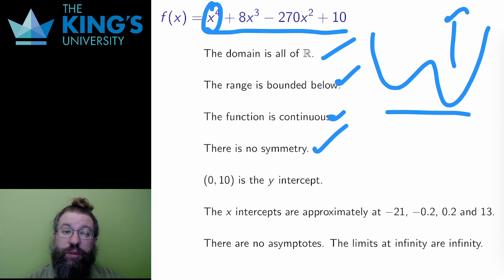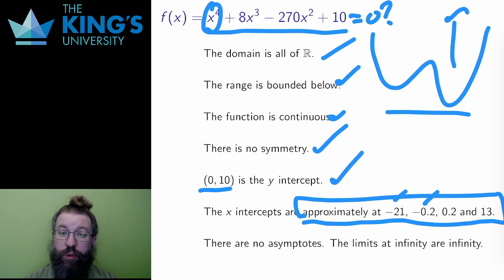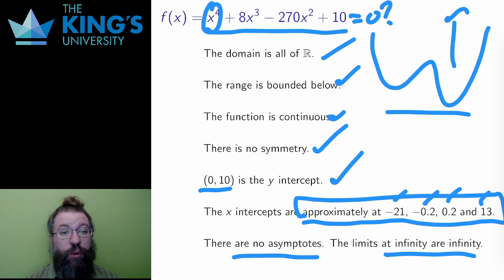If I set x equals to 0, the value is 10, so 0, 10 is the y-intercept. If I try to solve f of x equals 0, then I have to solve a quartic. This is, in general, pretty difficult. So I asked a computer for these roots, and they are all approximate, but the values are close to negative 21, negative 0.2, 0.2, and 13. These are the four x-intercepts. There are no finite limits to consider, and the limit at plus or minus infinity is infinity in both directions due to the positive x to the 4. This means that there are no vertical or horizontal asymptotes.